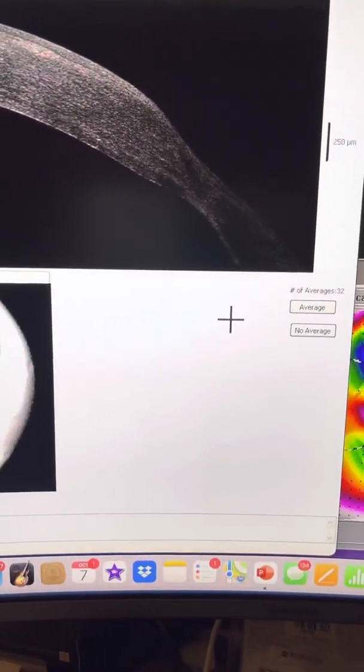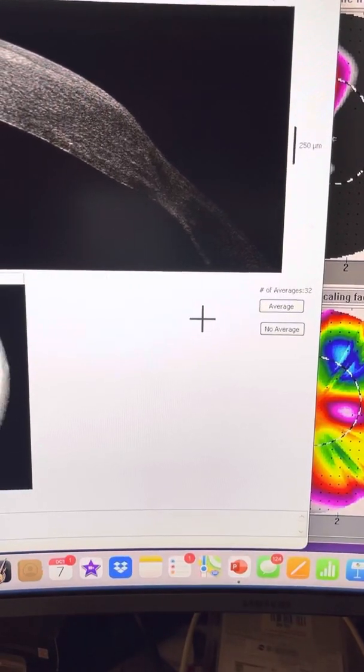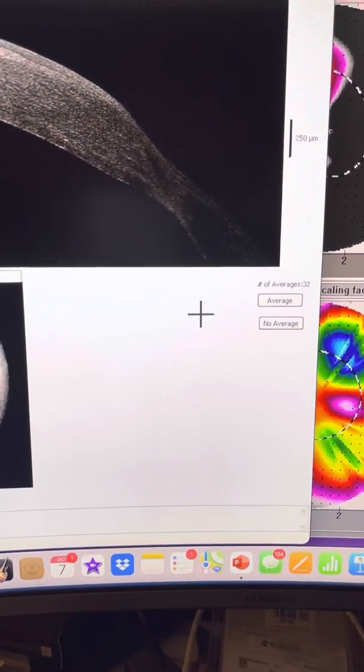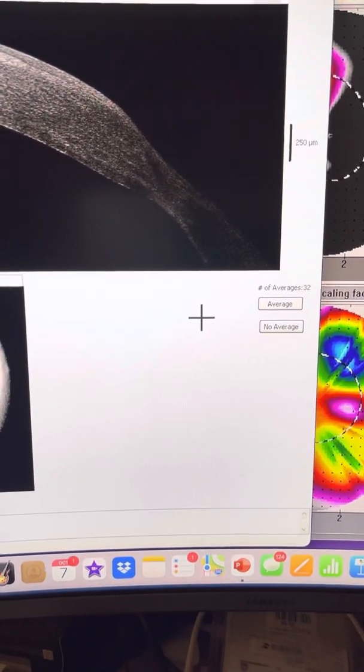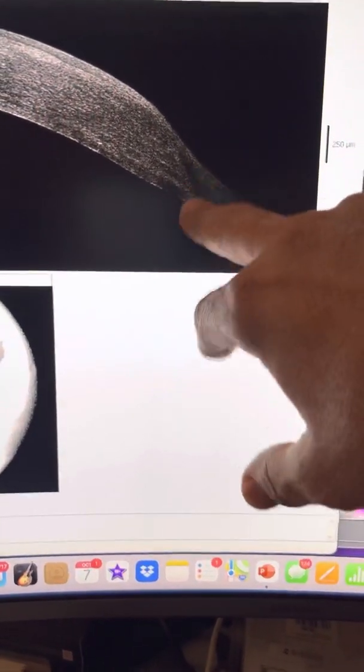Fortunately, most of these fall within the Pentacam maps. Pay attention to the pachymetry maps on the Pentacam and see if in that periphery of the graft, most grafts are eight to eight and a half millimeters. So right at the edge of that pachymetry map, try and seek for any area of significant thinning.